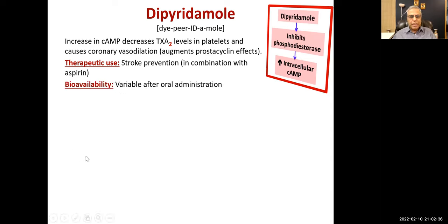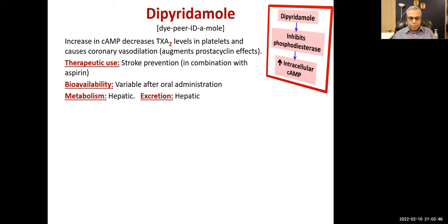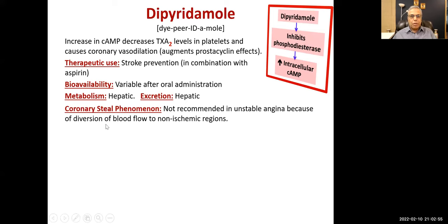Bioavailability is variable after oral administration, which is a bit of a problem. Metabolism is hepatic and excretion is also hepatic. So there could be drug interactions with drugs that reduce or inhibit the hepatic enzymes. Coronary steal phenomenon — because it is a vasodilator, it is not recommended in unstable angina due to diversion of blood flow to non-ischemic regions.